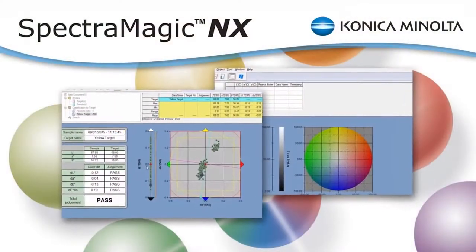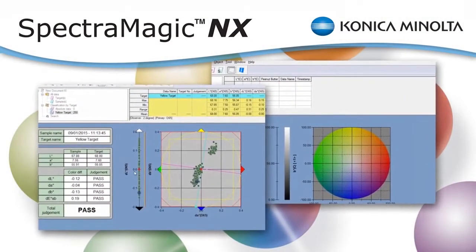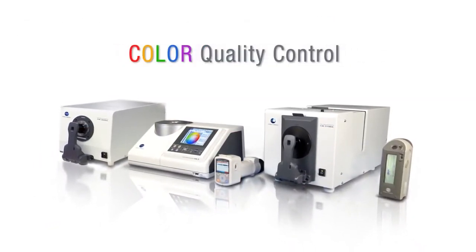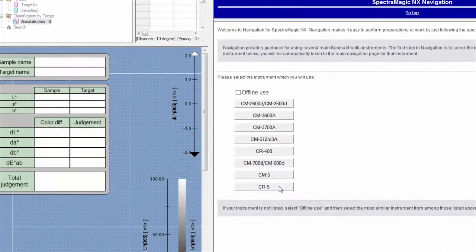Konica Minolta Sensing's SpectraMagic NX software is a complete quality control solution for the measurement and analysis of color. Use this powerful software with Konica Minolta Sensing spectrophotometers and most colorimeters.